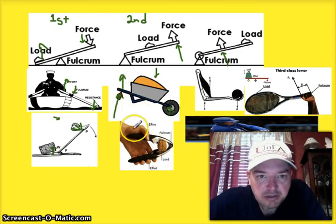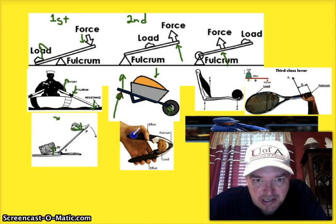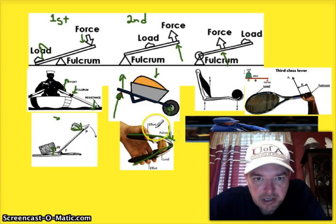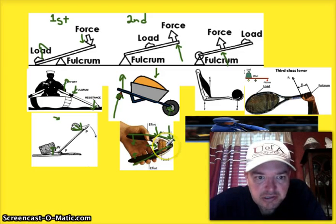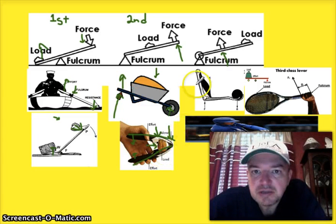A nutcracker is a modern example — it's actually two second-class levers. The fulcrum is at the very end, the load is in the middle, and you push down on each side. That pushes inward to crack the nut open. So that's two levers put together, even though you might not expect it to be a simple machine.